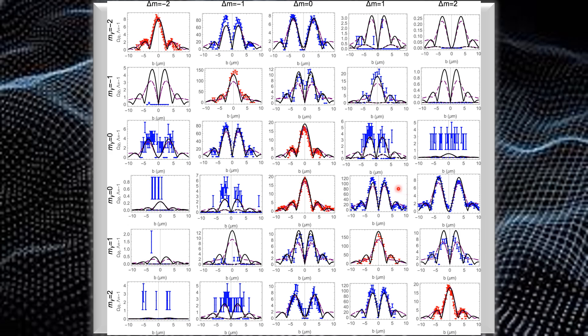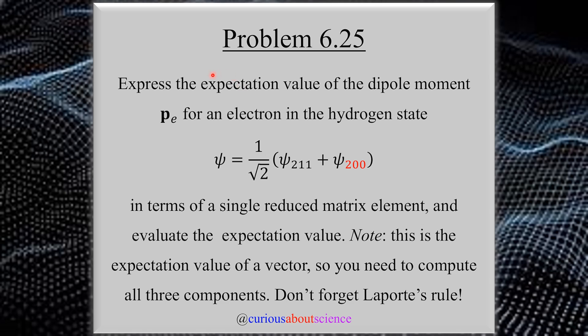Here we see an experimental verification of the position-dependent angular momentum selection rules for absorption of twisted light by a bounded electron. The paper will be linked below because this is a great application. For problem 6.25, what we have to do is express the expectation value of the dipole moment Pe for an electron in the hydrogen state — specifically the electric dipole moment, not to be confused with another famous dipole moment.